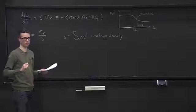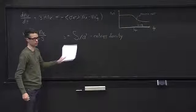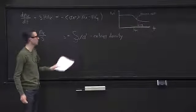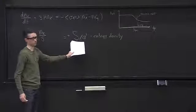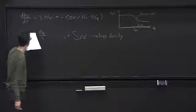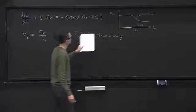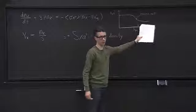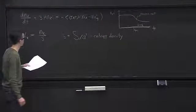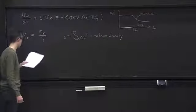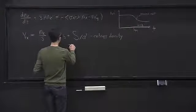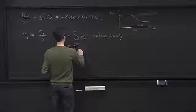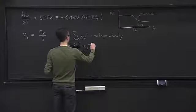The entropy density is useful because unless something weird happens to inject entropy into the universe, big S is constant. So roughly, if nothing weird happens, big S is constant, and that means little s goes like a to the minus three. Dividing n_chi by the entropy density is essentially the same as multiplying the number density by a cubed, giving nice flat behavior. The expression for little s in terms of the cosmological plasma is (2π²/45) g_star_s T³.